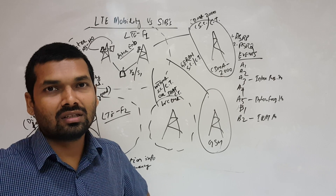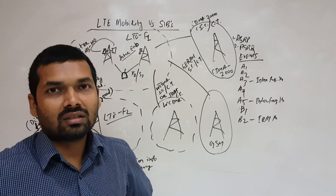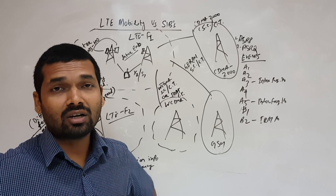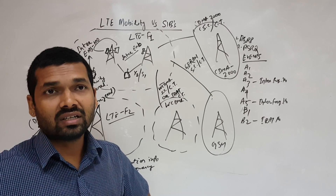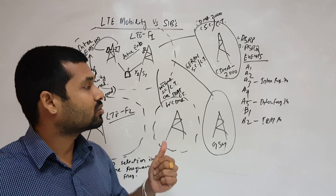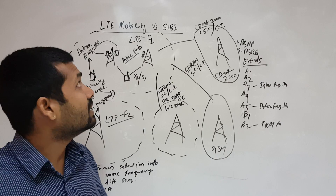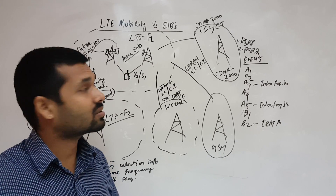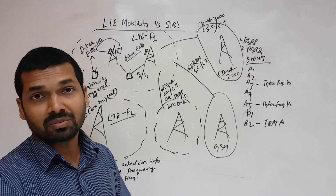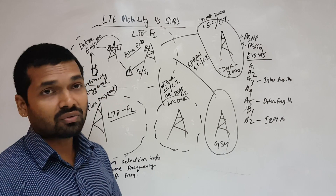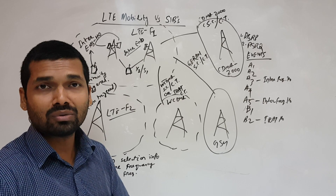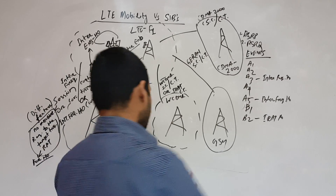Today we will be discussing mobility and the SIBs required for doing measurements or handover, and how handover triggers — all the event triggers and details about mobility. The topic is L3 mobility versus SIBs. I hope you know about SIBs — System Information Block or System Information Bits — which are required for doing cell selection or handover in an LTE network.